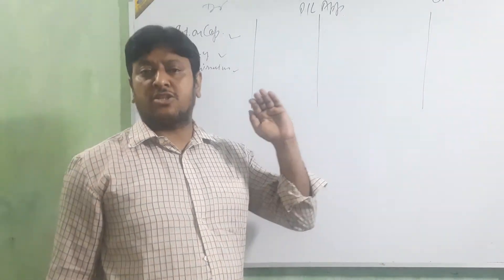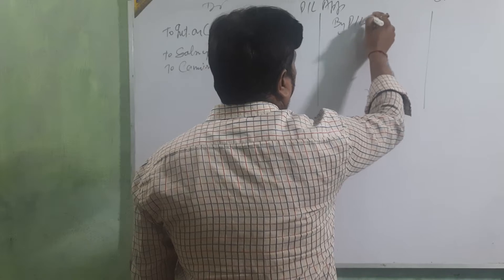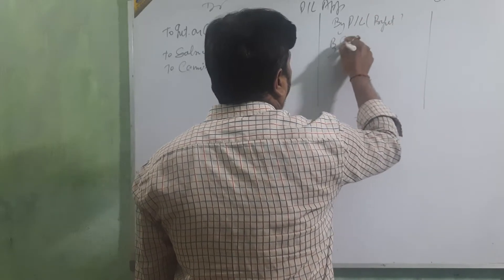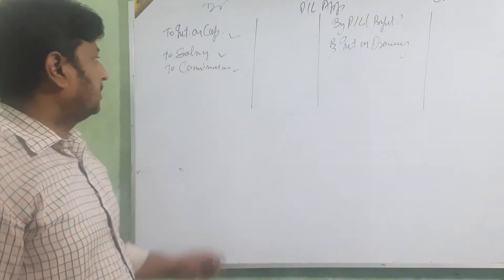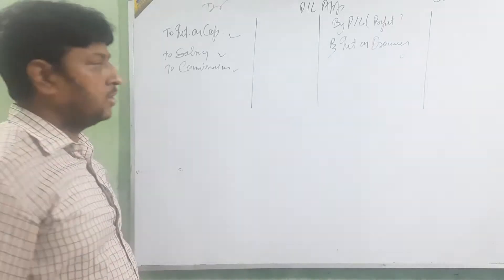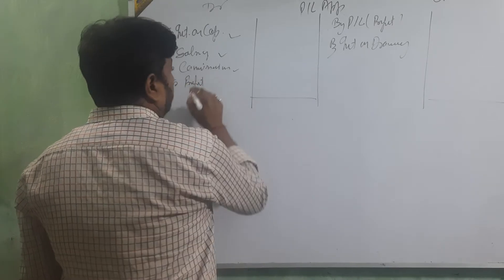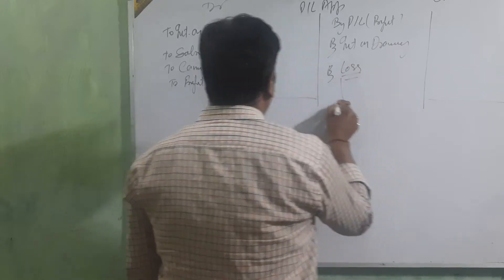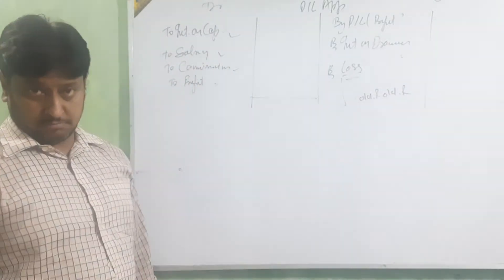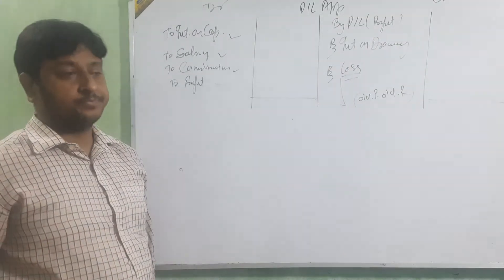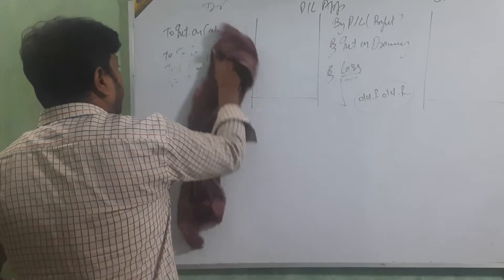On the credit side we put the P&L profit, and then by interest on drawings. These four things mainly are new. One is P&L, and then going for balancing. If the balance is coming on this side, that is profit; if on the other side, that is loss. The profit or loss is distributed in the old partners' ratio. In the old partners' ratio we are going to distribute that profit.